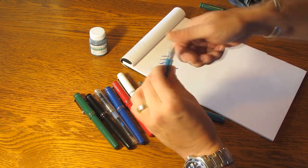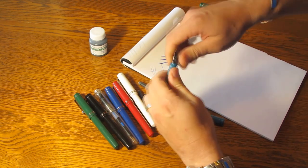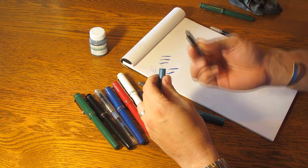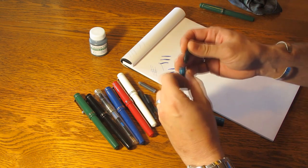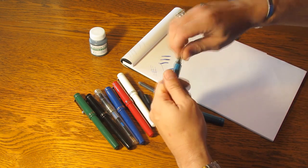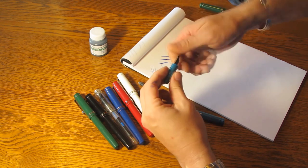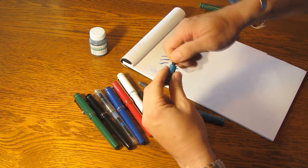You can also unscrew that nib unit. It's one of the things I like about the FPR Darjeeling is if you buy a pen, you could buy a separate nib unit, so you could try out different nib units. Very simple to install. Just lefty-loosey, righty-tighty, counterclockwise, clockwise to screw that in and unscrew it again.